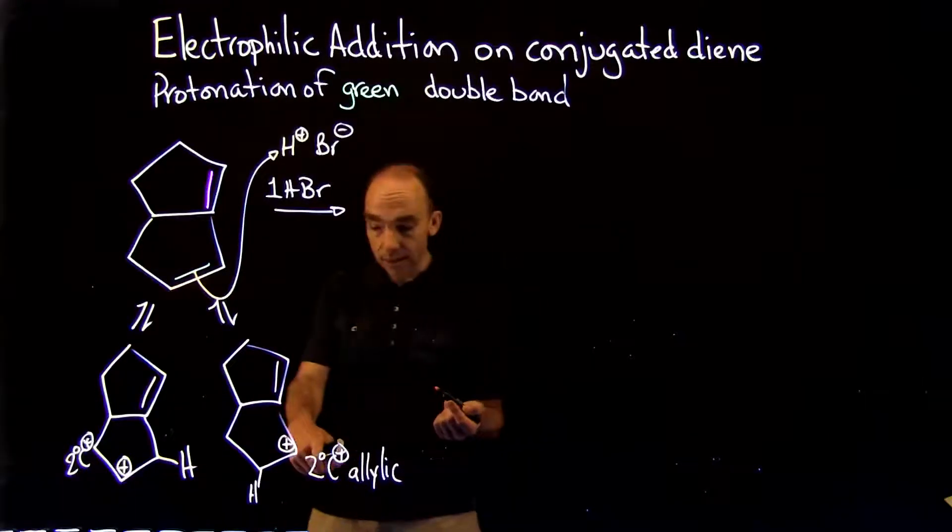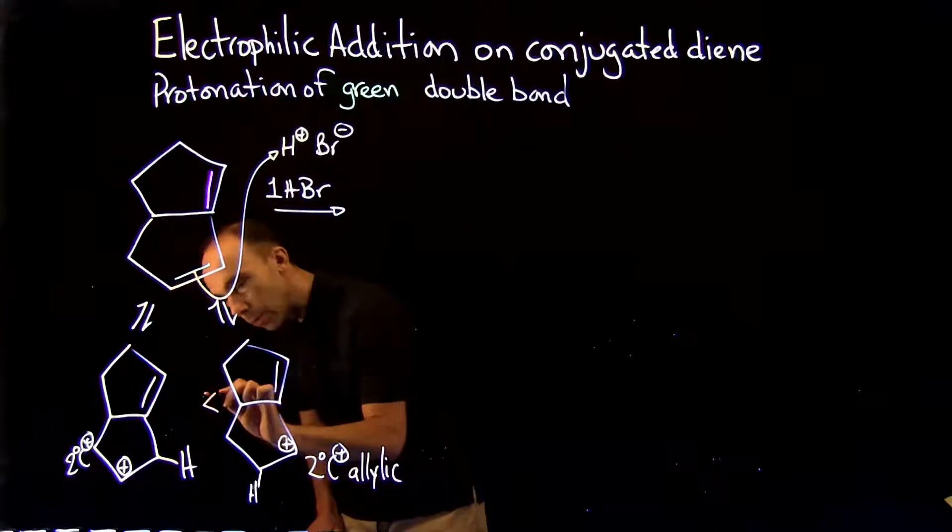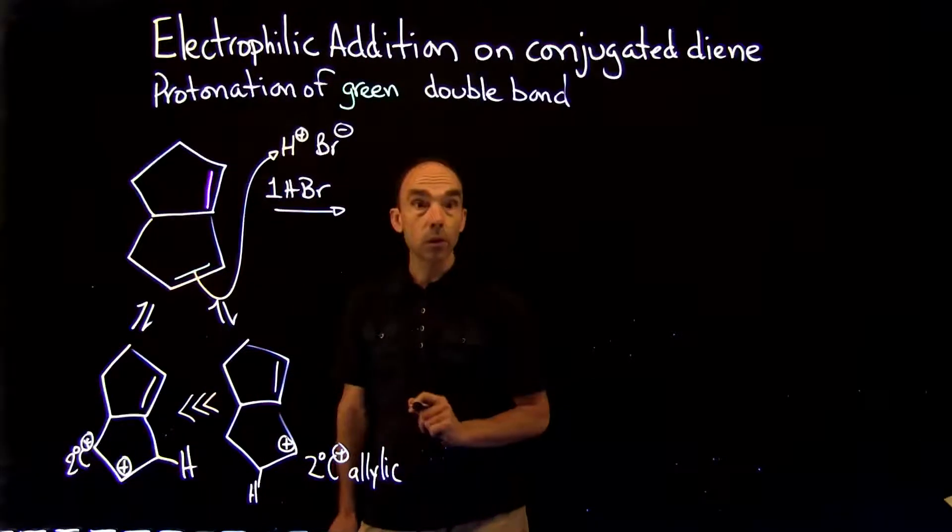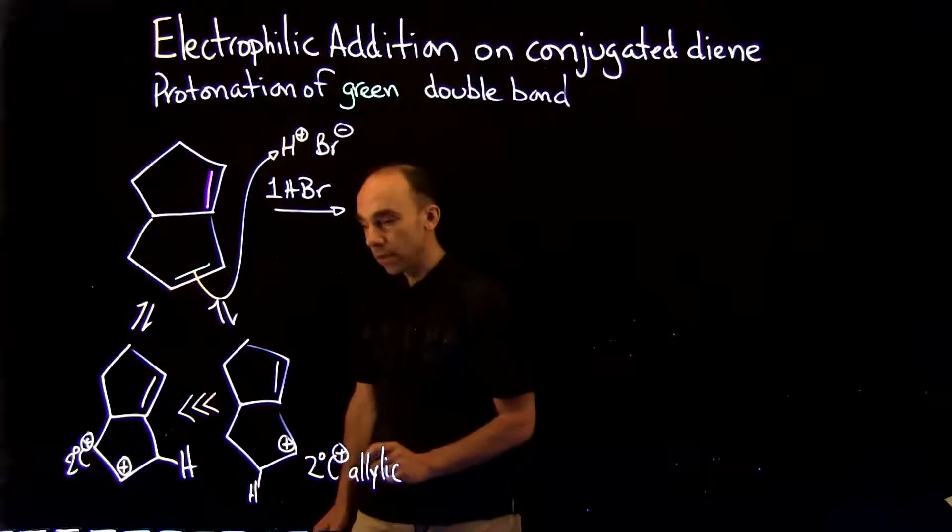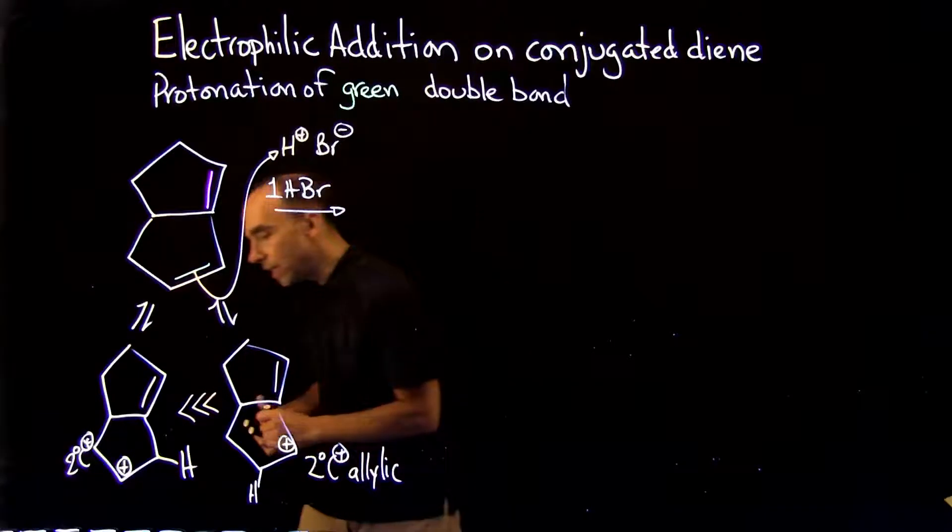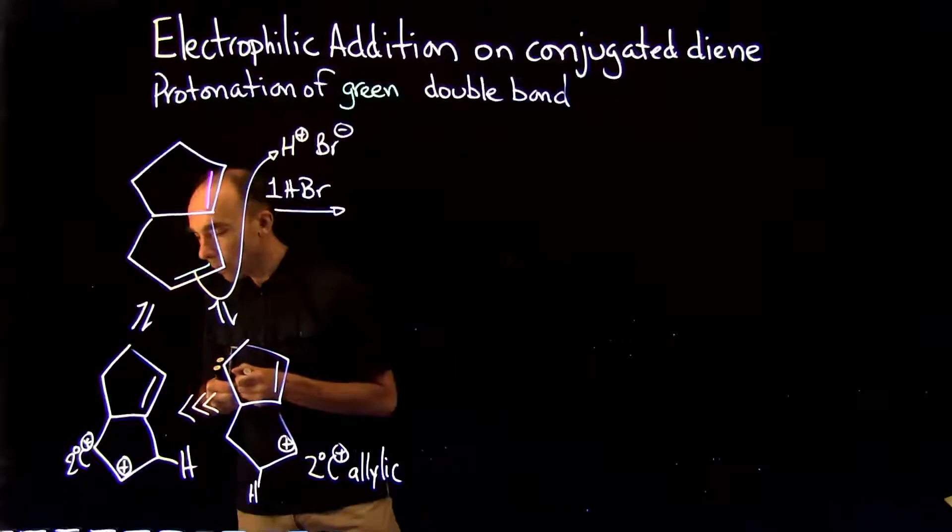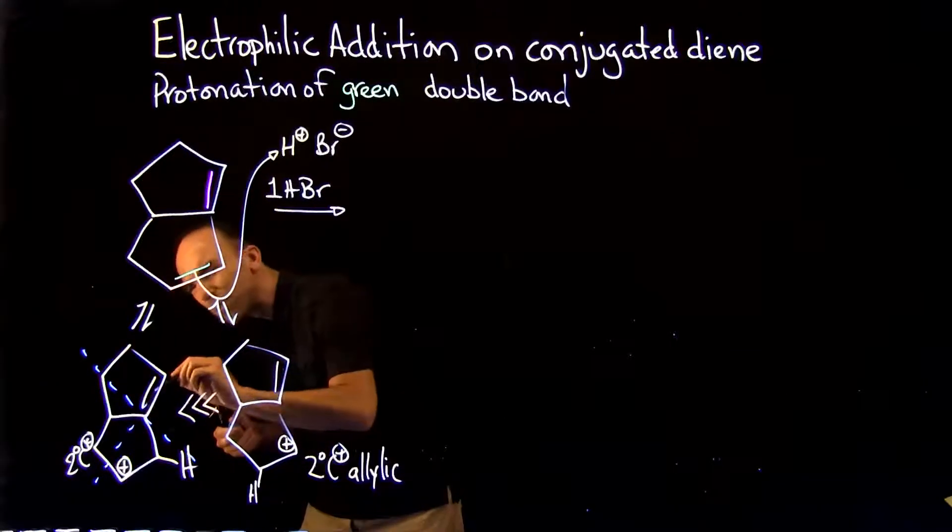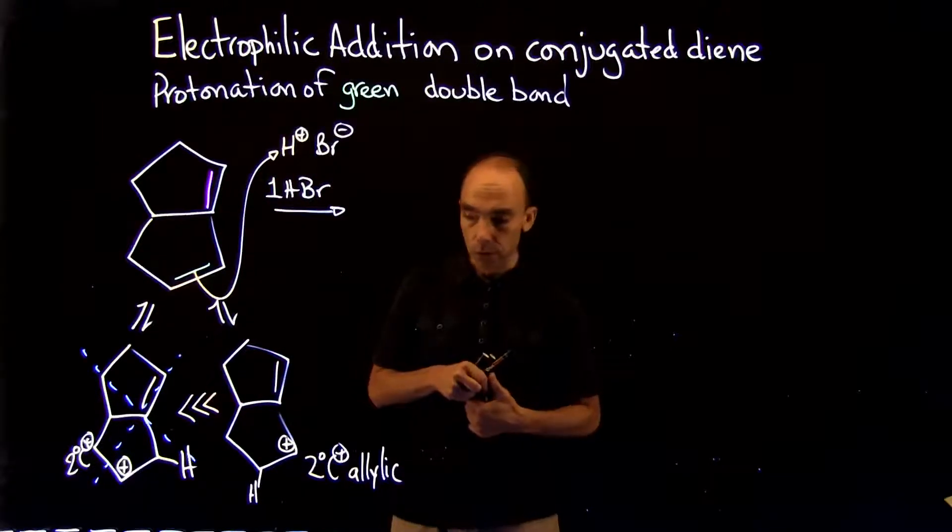Being not allylic and this one being allylic, we have the resonance form on the right here, the secondary allylic carbocation being more favored than the other one. So that means that we don't have formation of this intermediate, or if it's formed in minor amount, negligible.